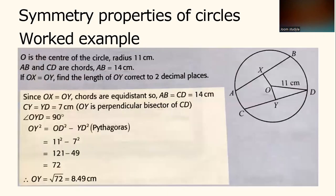We have another example. O is the center of the circle with radius 11 cm. AB and CD are chords. AB is 14 cm. If OX equals OY, find the length of OY correct to two decimal places.